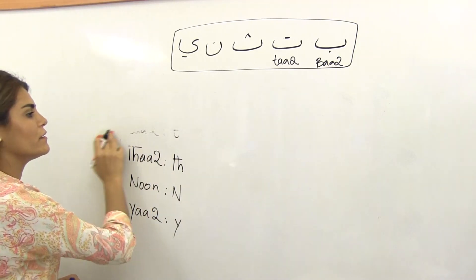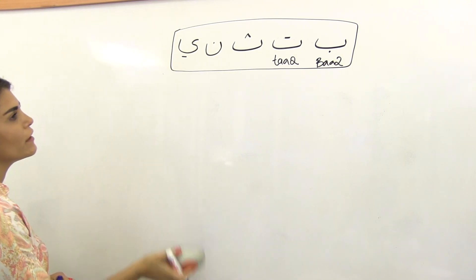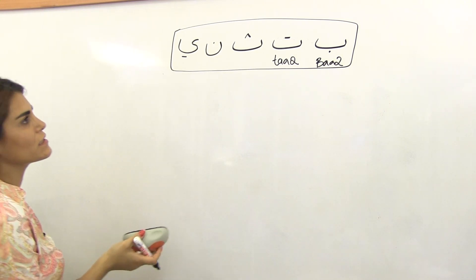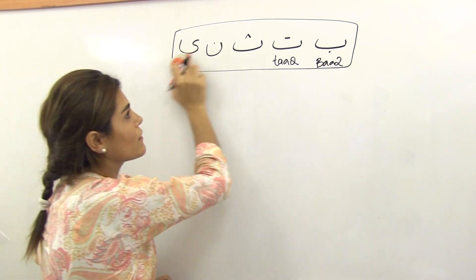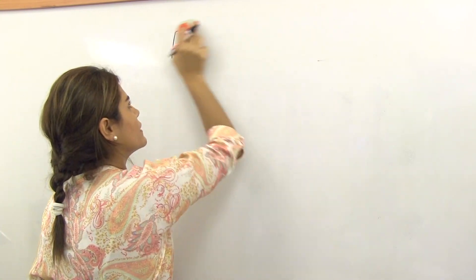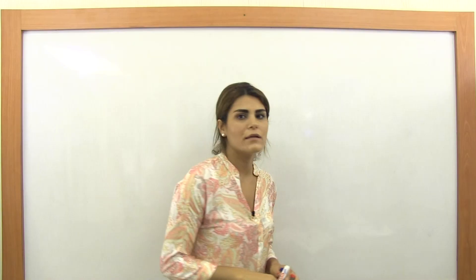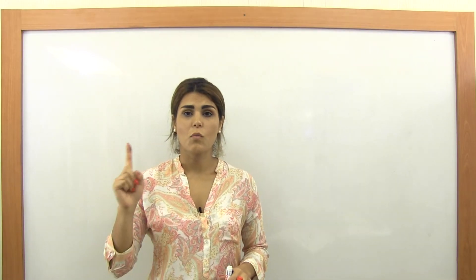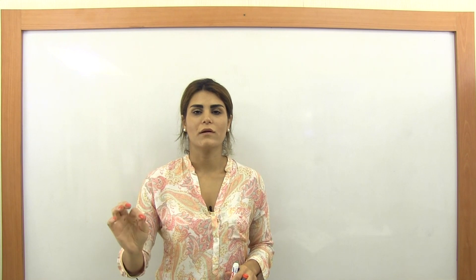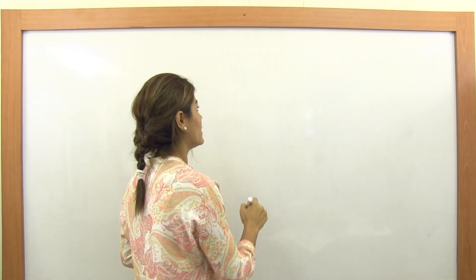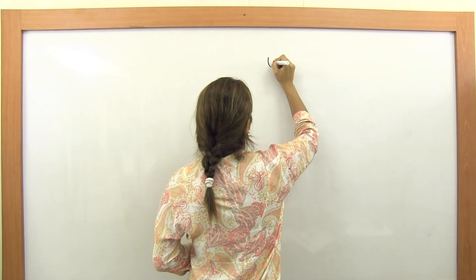This is the biggest family — the rest are smaller with two or three letters each. Now we are going to learn one more extra letter and then the diacritical marks. This extra letter is called Waw.